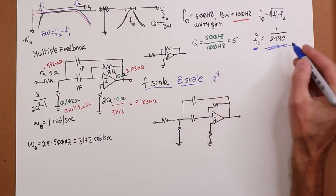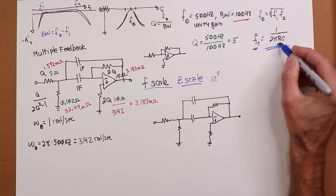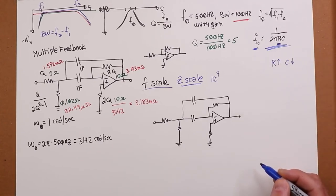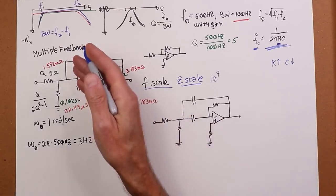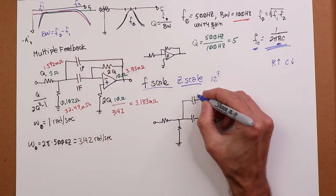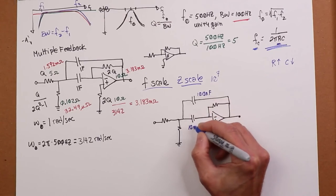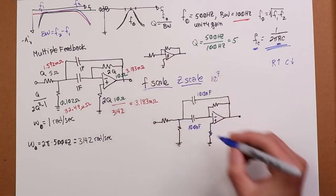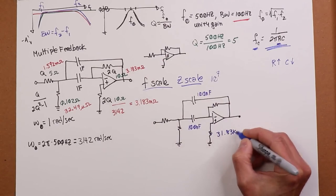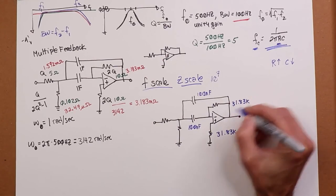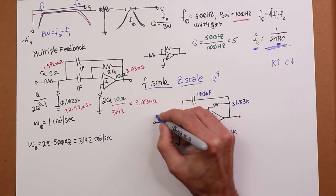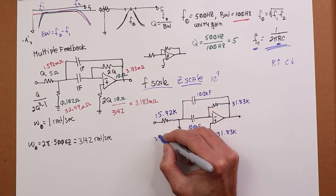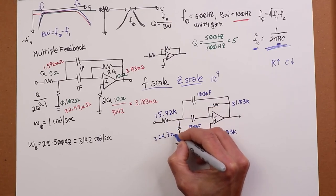So, if I did that, again, I multiply the resistors by 10 to the 7th, and that'll make the capacitors go down by 10 to the 7th. So, the caps, you divide them by 10 to the 7th, 1 farad divided by 10 to the 7th is going to get you 100 nanofarads. And then we multiply the resistor values, and these two things are going to work out to 31.83k. And then these two guys over here are going to work out to 15.92k and 324.7 ohms.